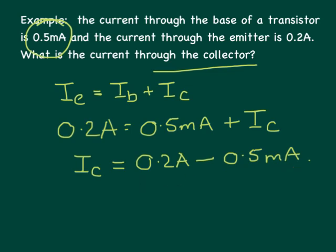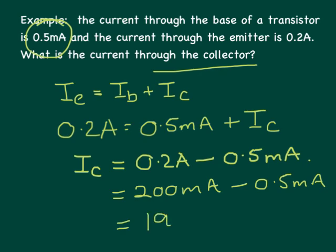I could convert them both to amps, but it's easier for me to convert them both to milliamps. So 0.2 amps is actually 200 milliamps minus 0.5 milliamps gives me my overall current in the collector as 199.5 milliamps.